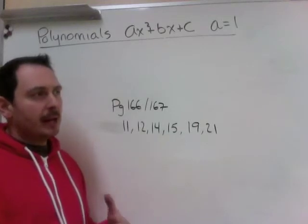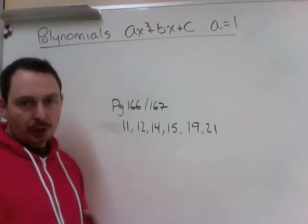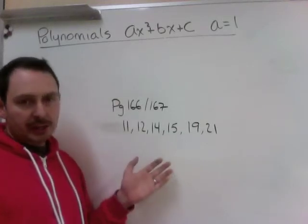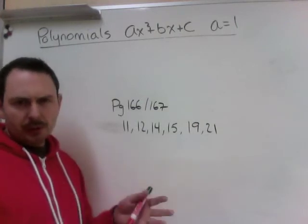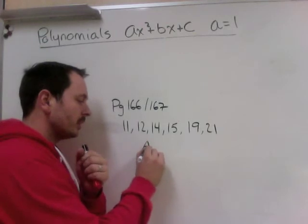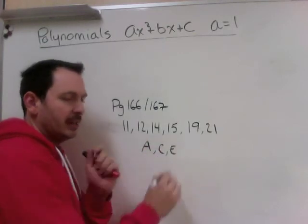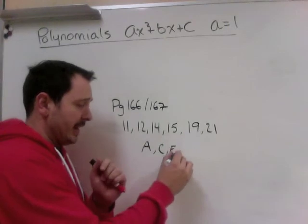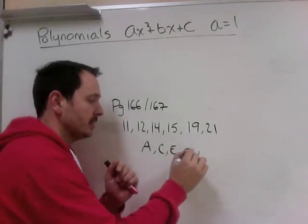If the question asks you anything about algebra tiles, just ignore that. Do the part of the question that is not involving the rectangles or the algebra tiles. And for each question, if you just do the odd letters, A, C, E. If it goes higher than that, G, I, so on.